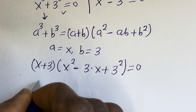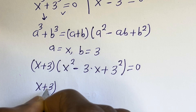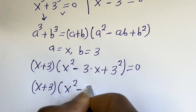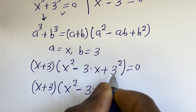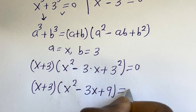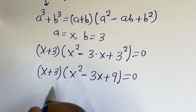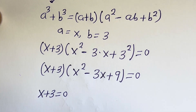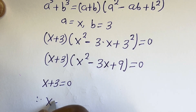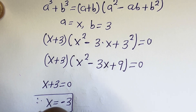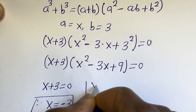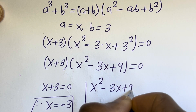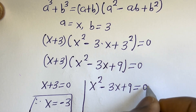Then this is (x + 3)(x² - 3x + 9) is equal to 0. There are two cases here. The first case is x + 3 is equal to 0, therefore x is equal to minus 3. And the second case is x² - 3x + 9 is equal to 0. So this is a quadratic equation.